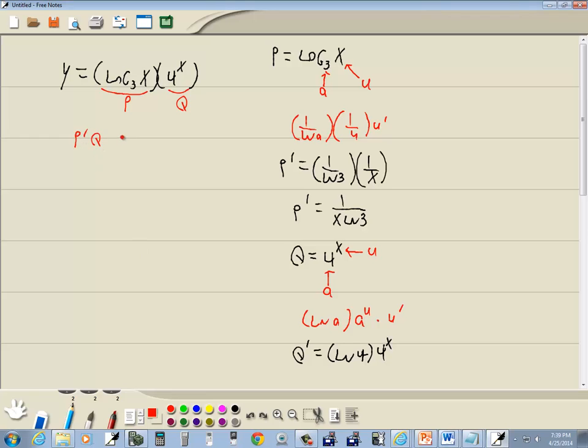We're gonna have P prime Q plus P Q prime. So then for our derivative, P prime is 1 over x natural log of 3 times Q which is 4 to the x, plus P which is log base 3 of x times Q prime which is natural log of 4 times 4 to the x.